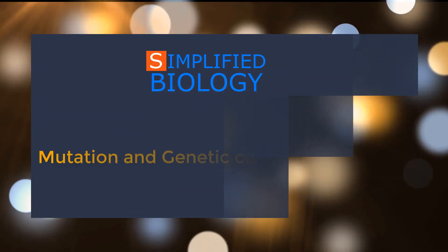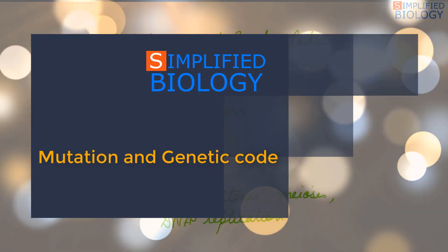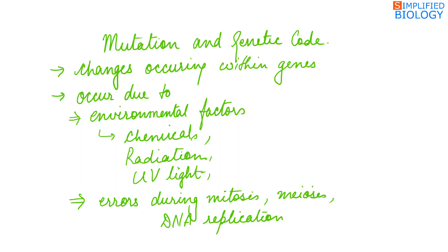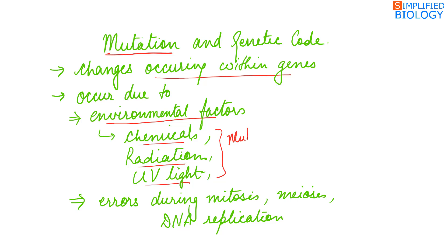Welcome to Simplified Biology. Today's topic is mutation and genetic code. Mutations are changes occurring within genes. These changes occur either due to environmental factors like chemicals, radiations such as X-rays, gamma rays, and UV light. These are referred to as mutagens — substances capable of causing mutation. Mutation occurring due to environmental factors is known as spontaneous mutation because the cause is never detected.